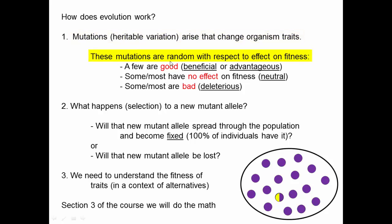These mutations that arise are random with respect to their effect on fitness. A few of these are good for the organism — the organism with the mutation does better — and we term these beneficial or advantageous mutations. Some, or maybe even most, have no effect on fitness, and we term those neutral mutations. And then some or most of these mutations are bad for the organisms that have them, so we term them deleterious.